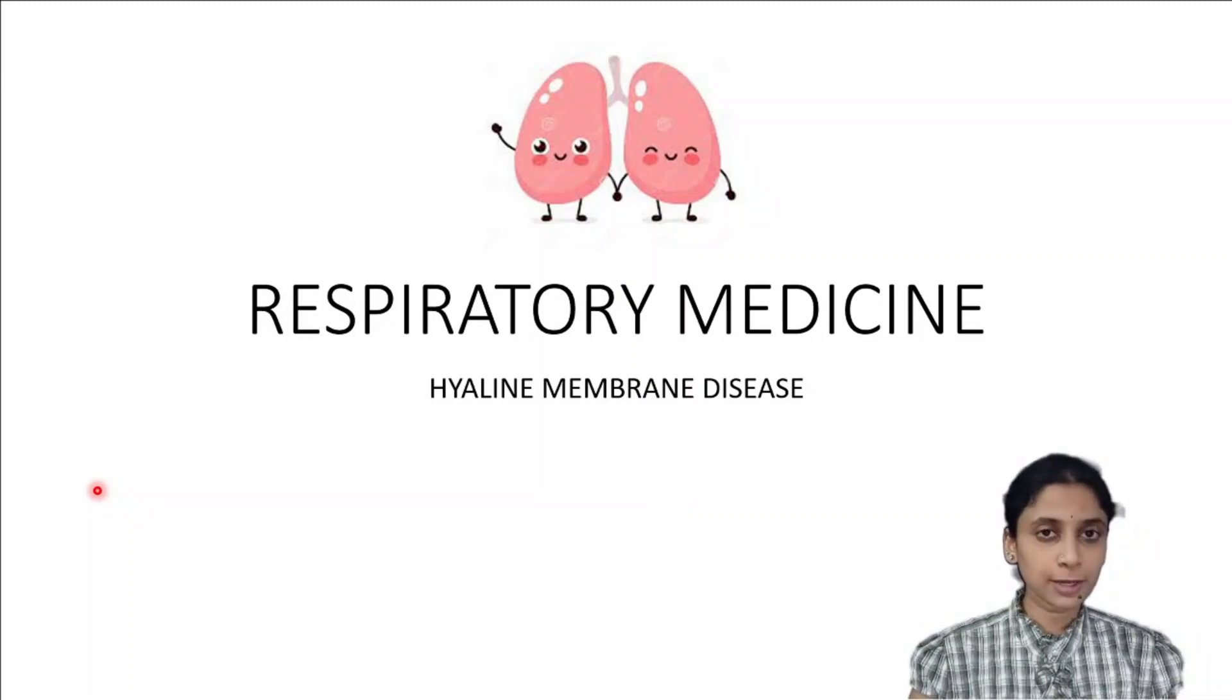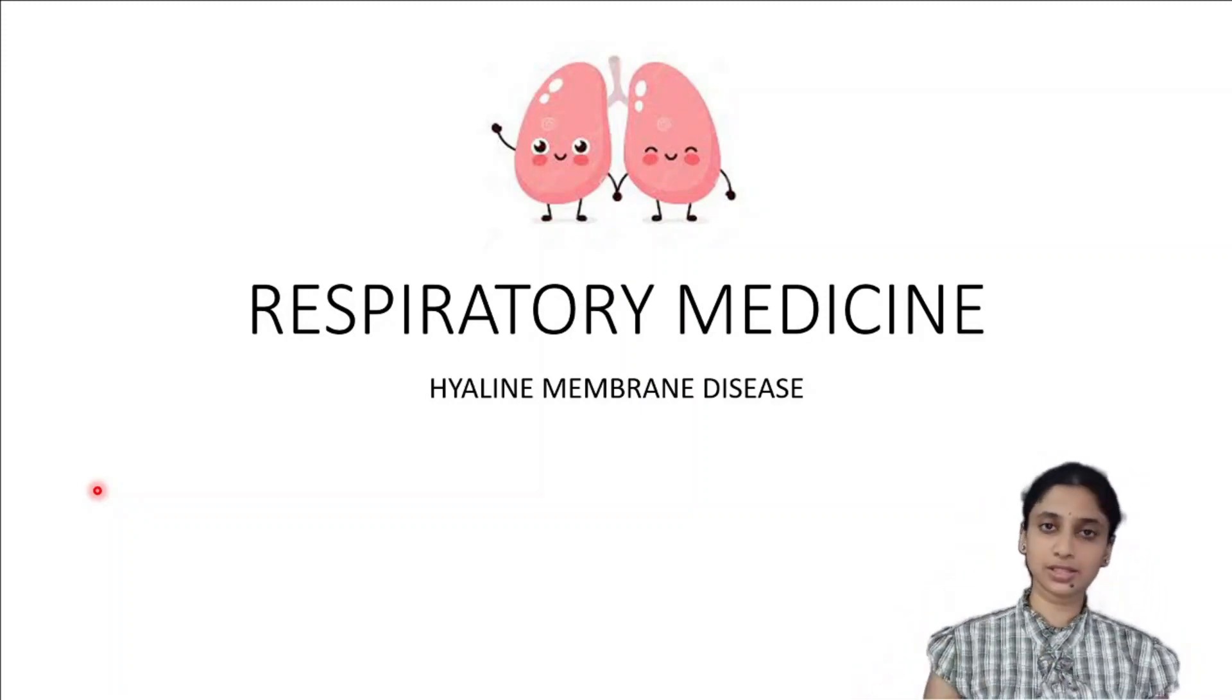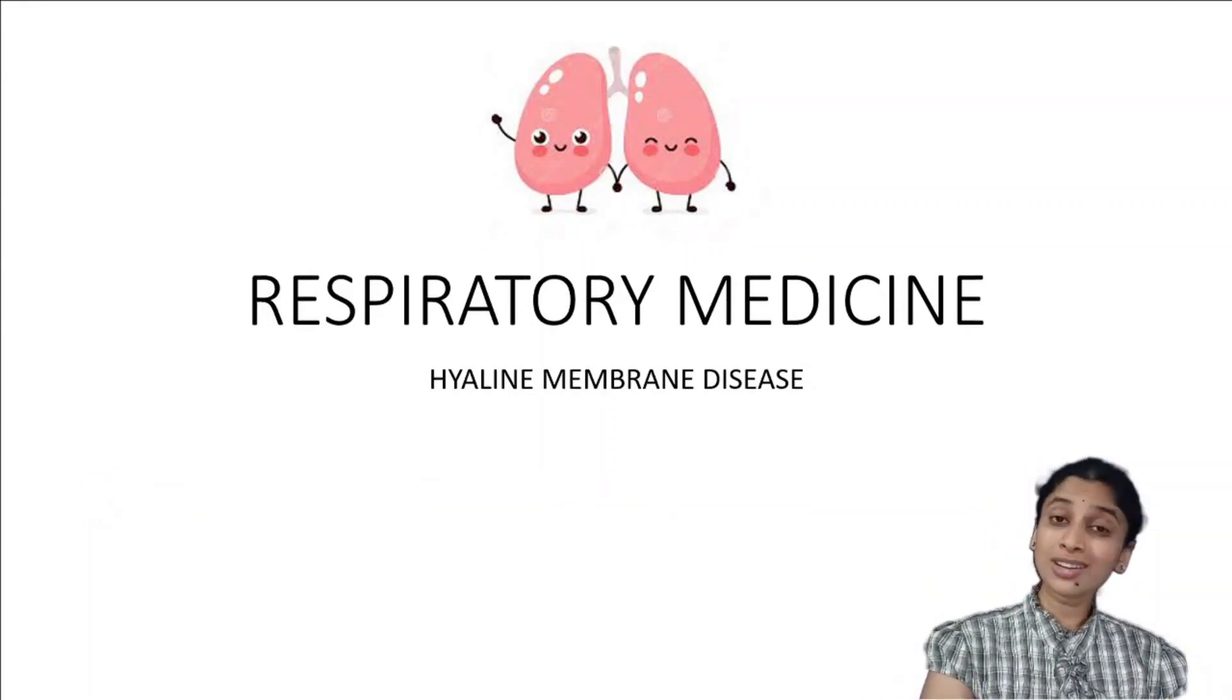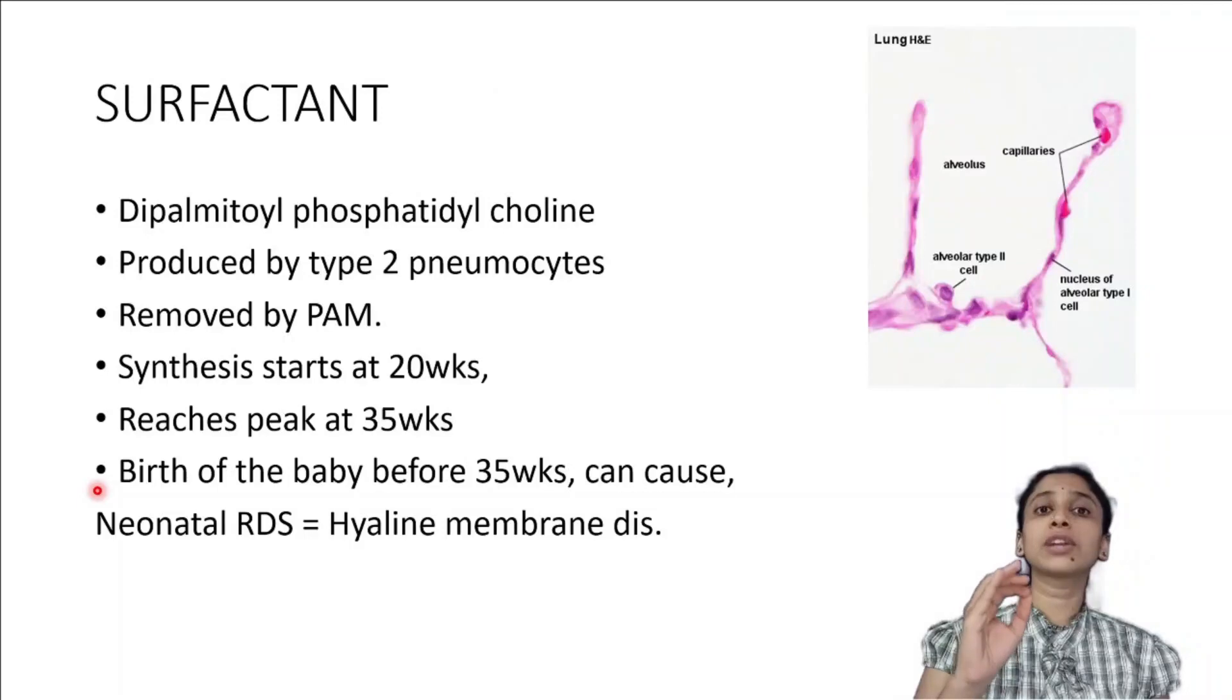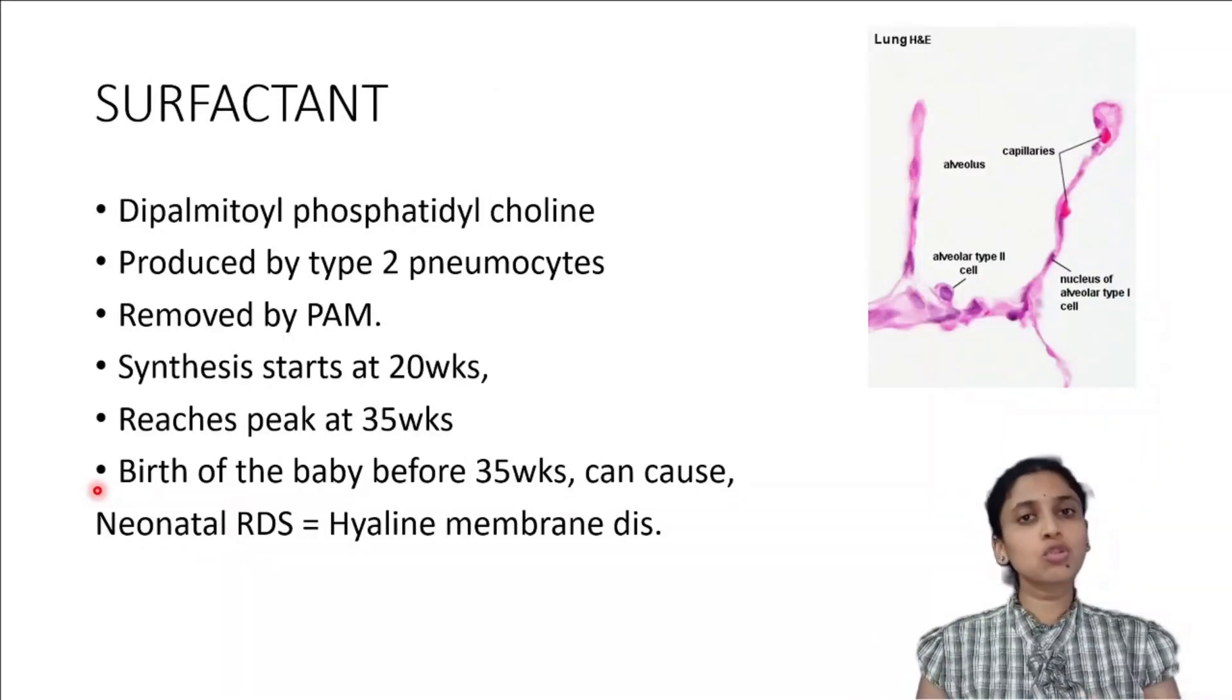So what is a surfactant? Surfactant is a substance which decreases the surface tension. And what is it made up of? It is made up of dipalmitoyl phosphatidylcholine, DPPC.